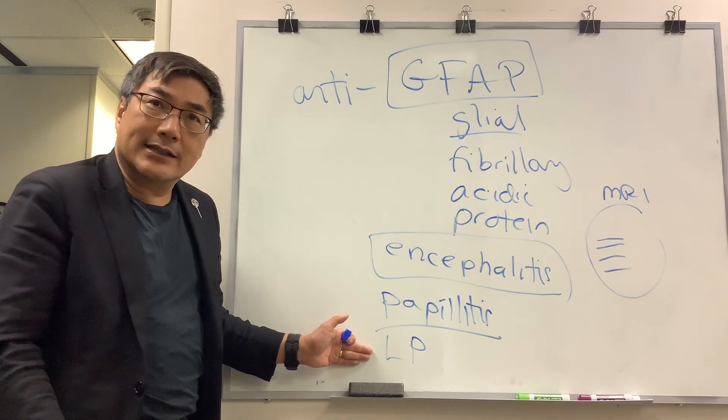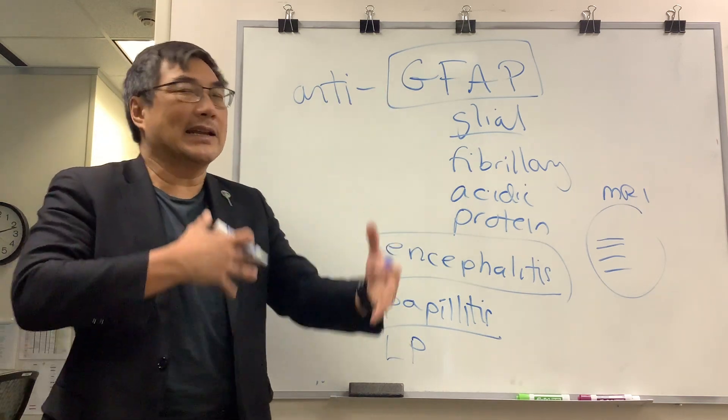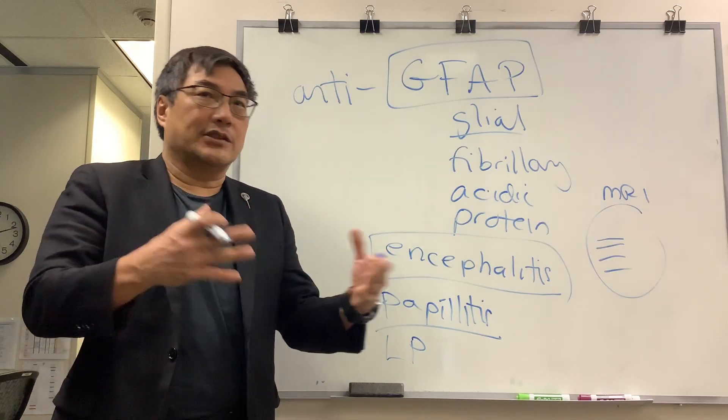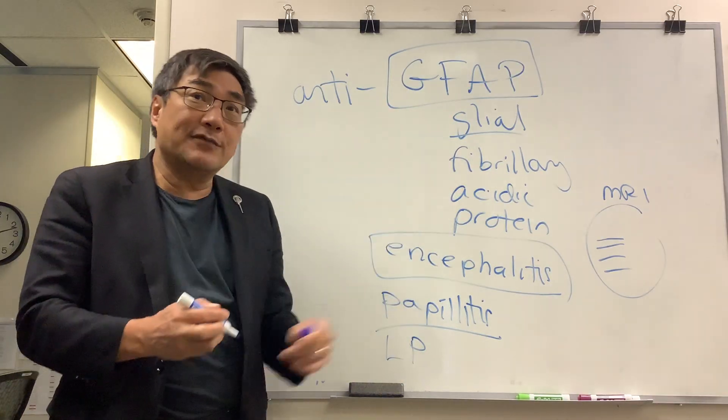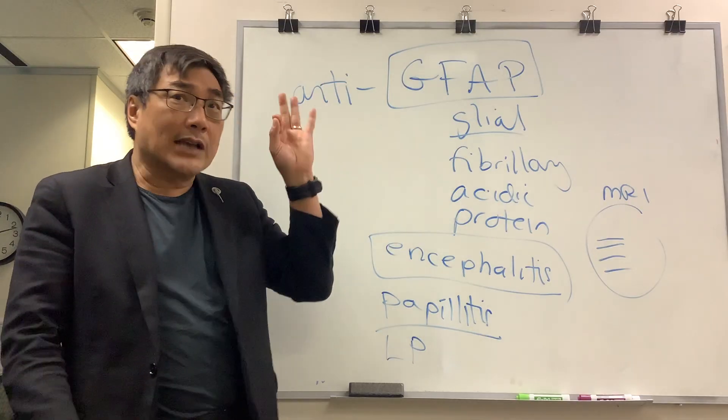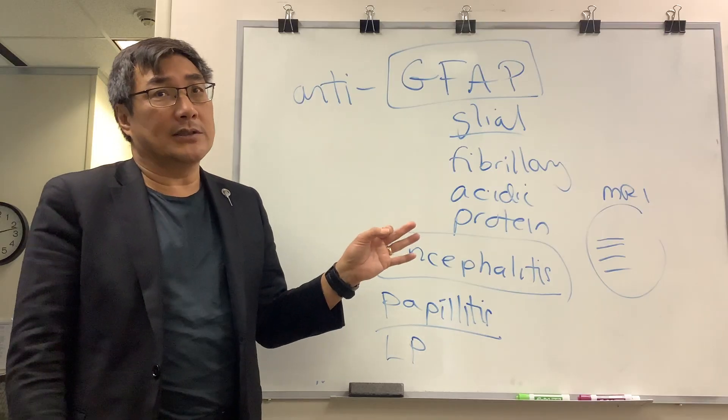The treatment, as with all autoimmune inflammatory disorders, can be anti-inflammatory treatment: steroids, immunosuppressive agents, IVIG, plasmapheresis. There aren't as many cases of GFAP as NMO and MOG, so the precise etiology is not known and the precise treatment regimen is not clear.